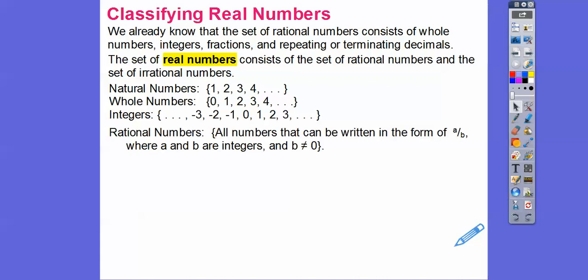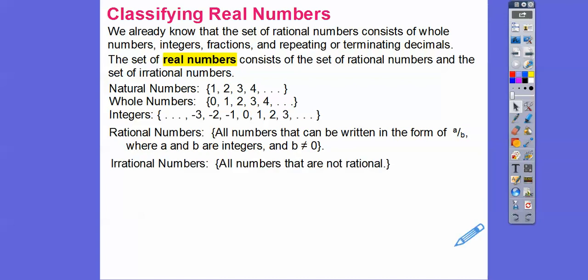Rational numbers are written as a over b, where a and b are both integers. Rational numbers are also repeating decimals or terminating decimals. And then an irrational number is a real number, but it's not a rational number.